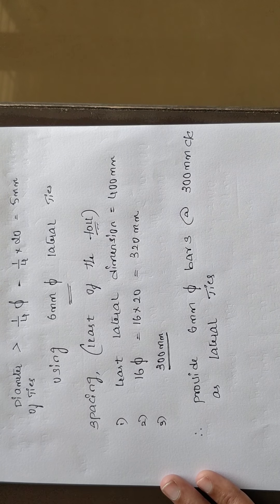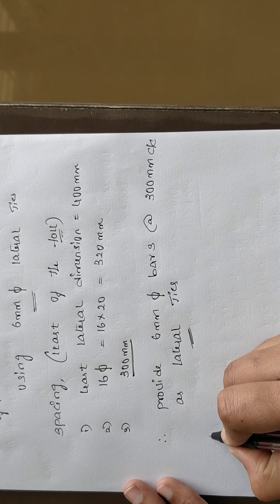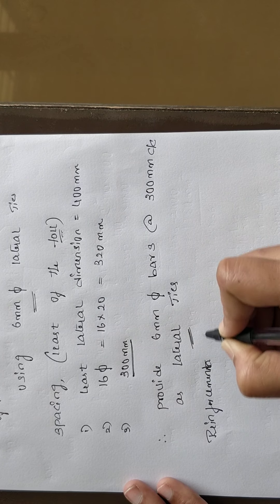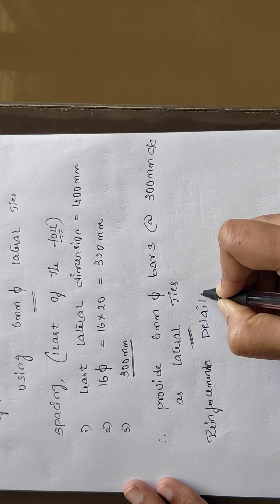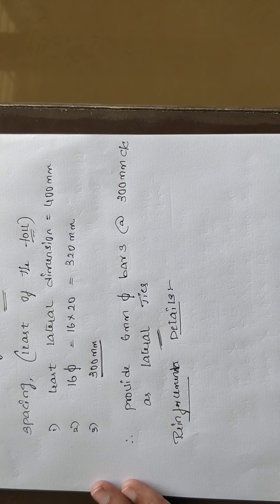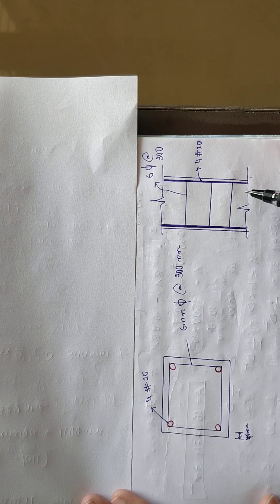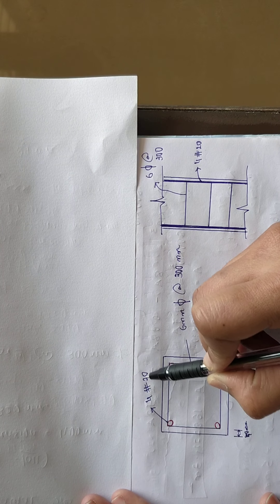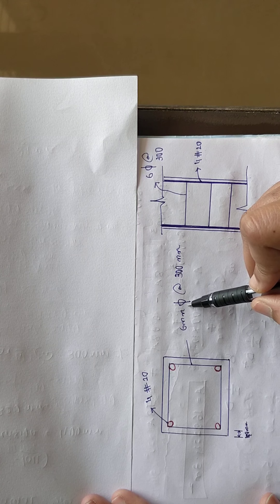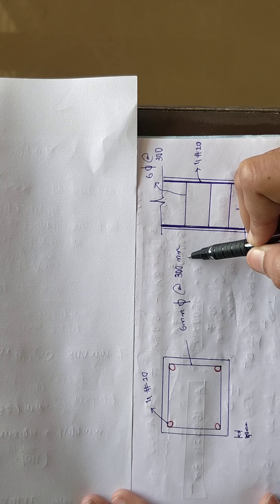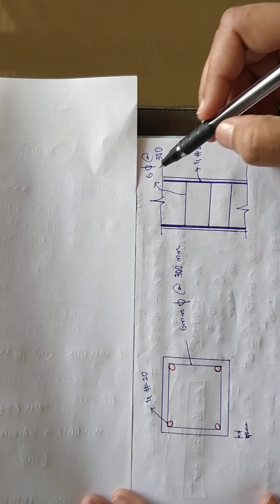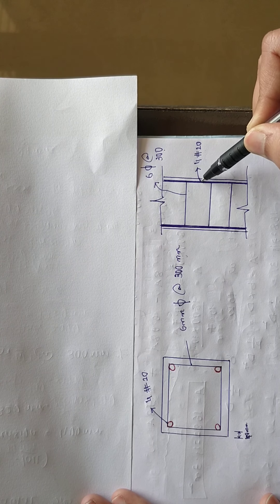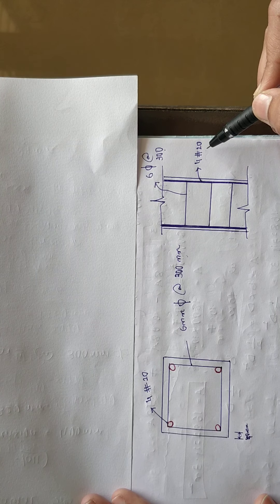Reinforcement details: Provide 4 bars of 20 mm diameter as main longitudinal reinforcement, and lateral ties of 6 mm diameter at 300 mm center to center. This completes the reinforcement design for the short axially loaded square column. Thank you.